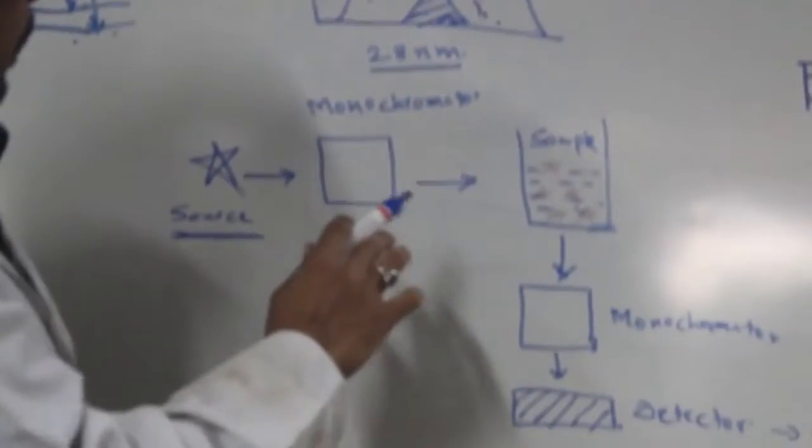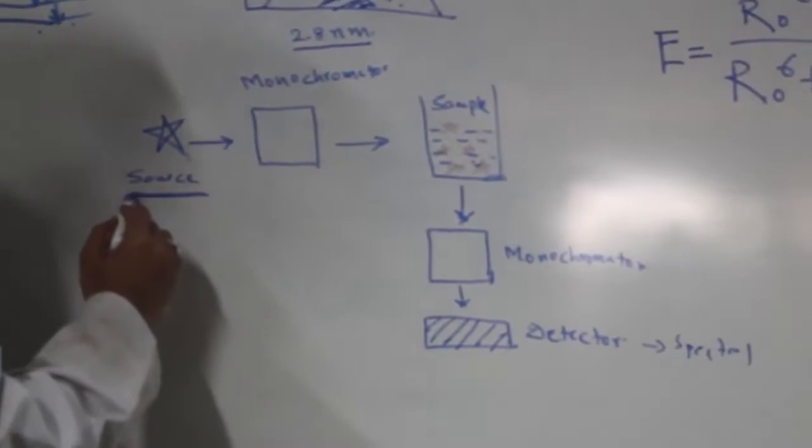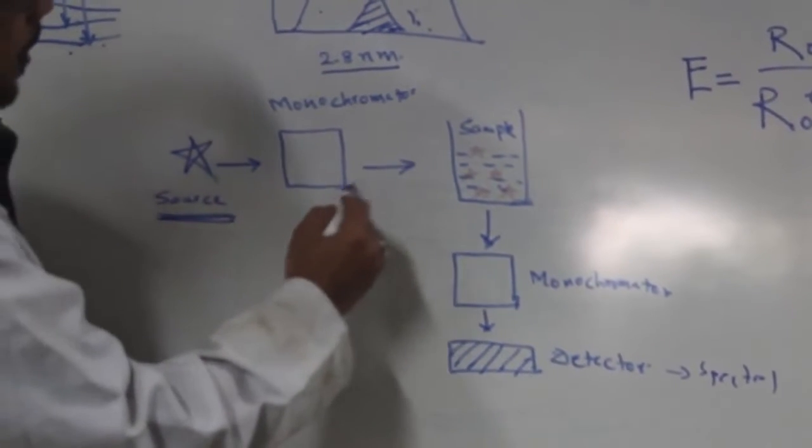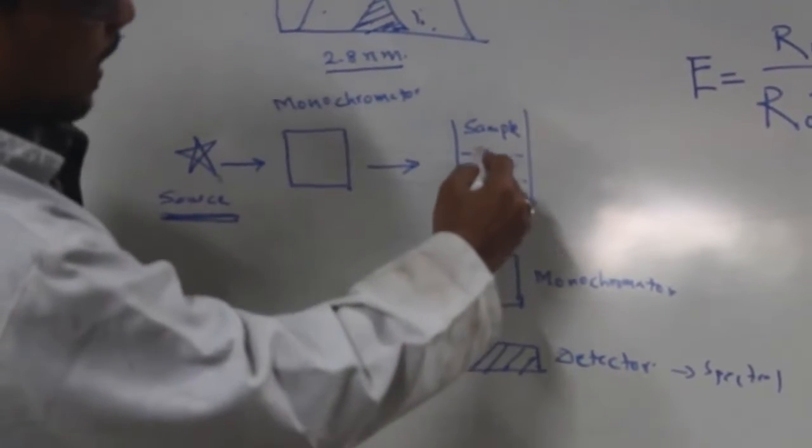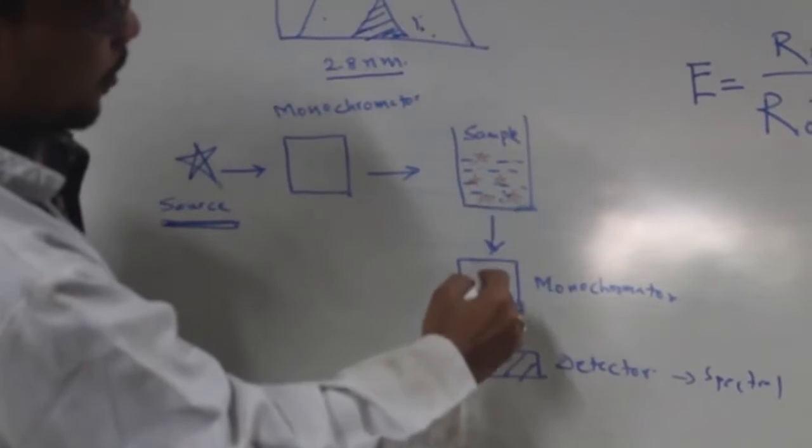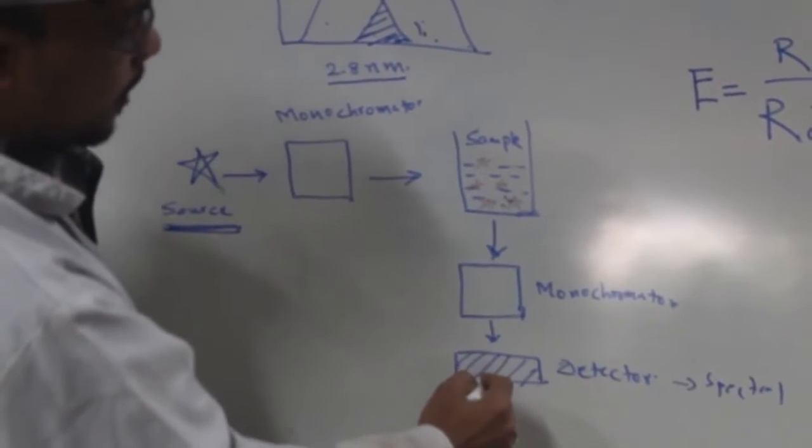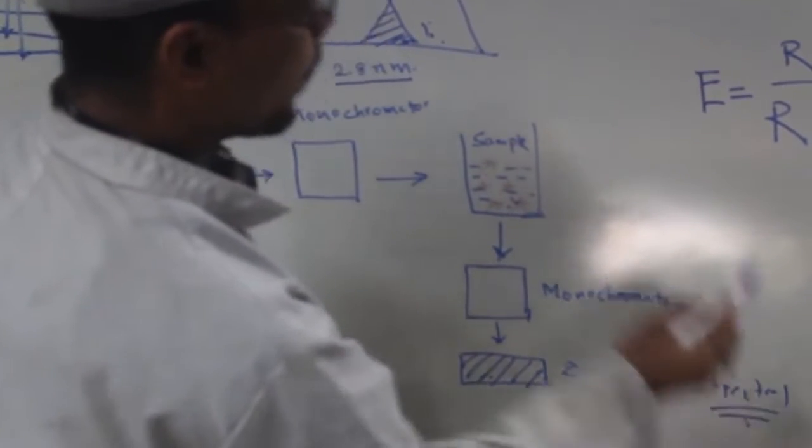To go into fluorescence instrumentation a little bit, you have a light source which passes through a monochromator and excites the sample. When the sample emits, that emission is collected through another monochromator and detected, giving the spectral output.